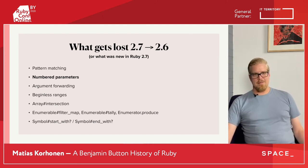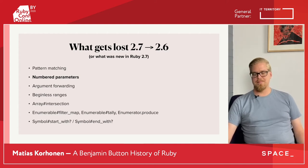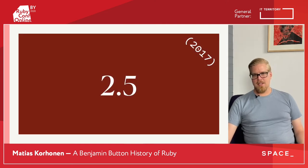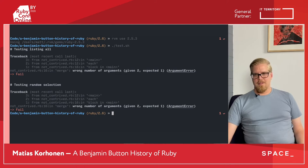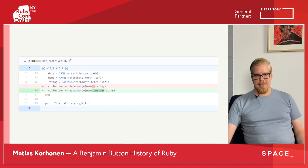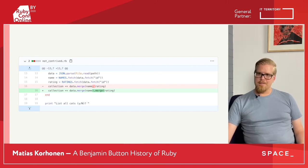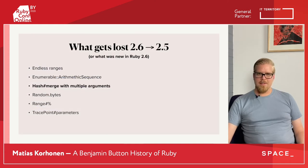Other stuff that would have broken would be pattern matching or beginless ranges, but we're not using those. Moving on to a slightly older version again — version 2.5. The only change we need to make is to call merge twice instead of passing multiple arguments to it. That's the only difference: hash.merge doesn't take multiple arguments in version 2.5.